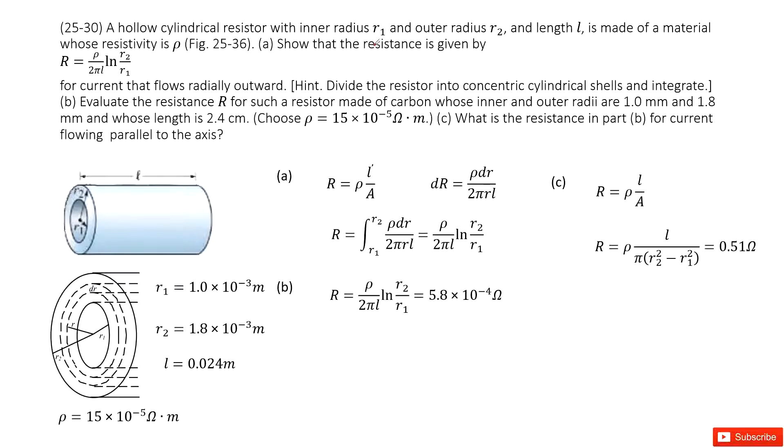I ask you to prove the resistance is given by this function for a current that flows radially outward, so the current flows radially outward this way.